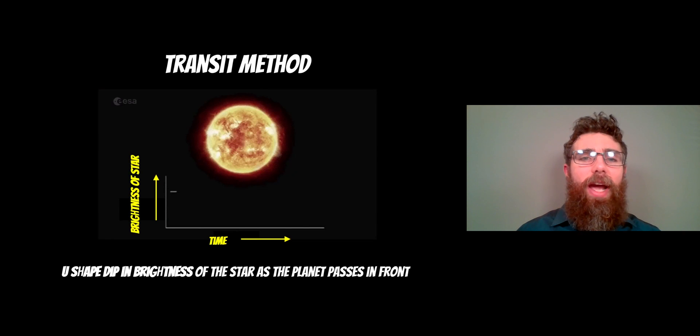Just a recap of what the transit method is: it's when a planet passes in front of its star and we see that as the star getting dimmer, so we can detect an exoplanet that way.